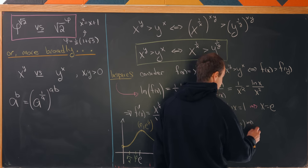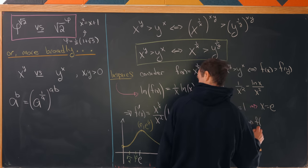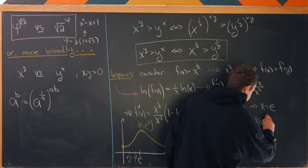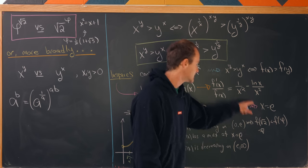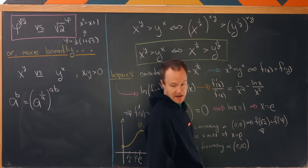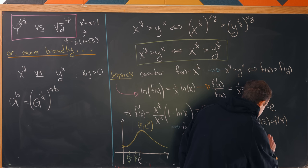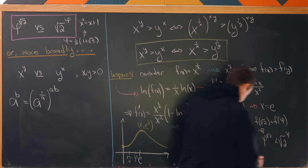Which tells us that in fact, f of the square root of 2 must be less than f of phi. So now using this result that we added in, we'll see that in fact, phi to the square root of 2 is less than square root of 2 to the phi.